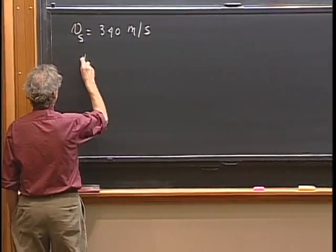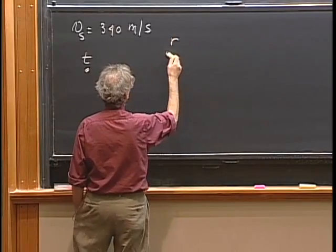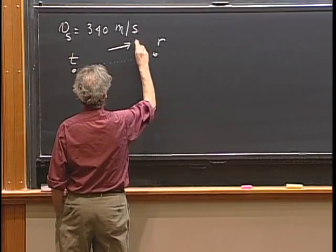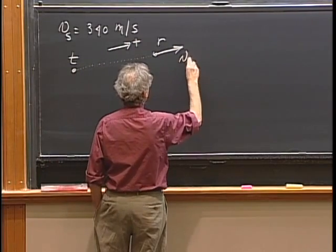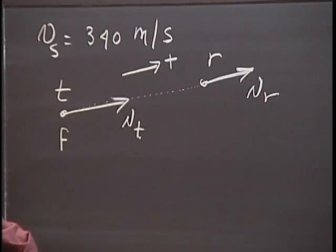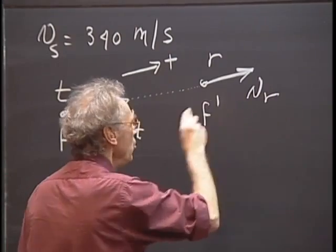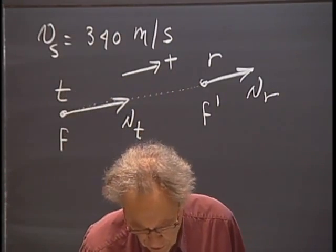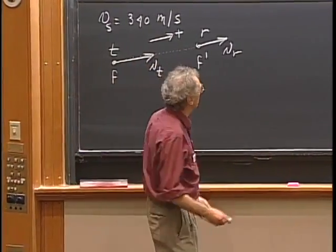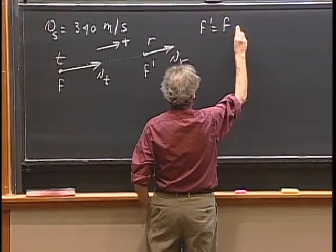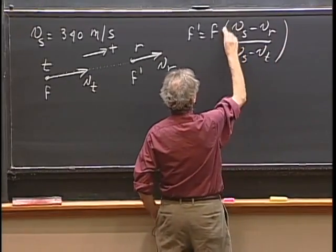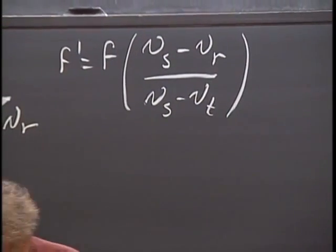Let this be the transmitter of sound and this be the receiver of sound — that could be you. Let us assume that you move with a certain velocity; I call this the plus direction. You move with a velocity vr, and let the transmitter move with a velocity vt. The transmitter produces a sound frequency f, but what you receive is a frequency f prime. If you go in velocity in this direction, that's positive, and a velocity in this direction becomes negative. Then f prime is f times the speed of sound minus vr, divided by the speed of sound minus vt. This is very asymmetric, as you can see immediately.